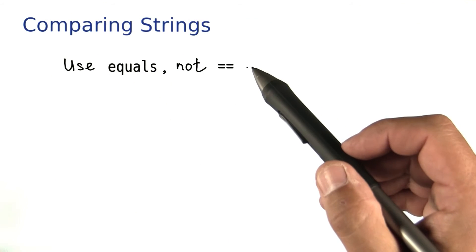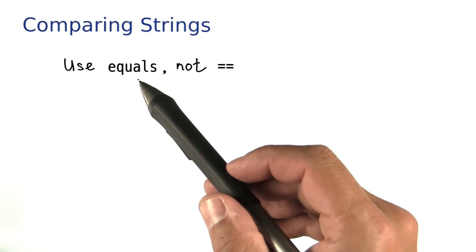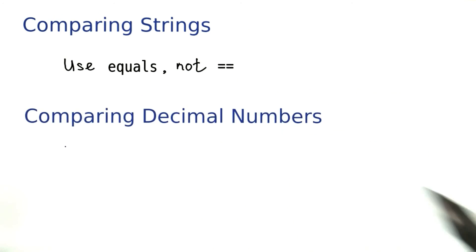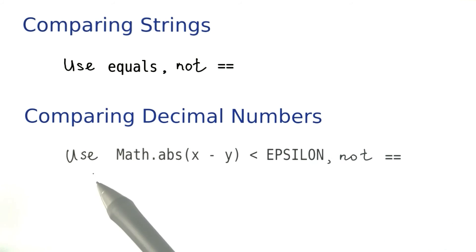So the takeaway is, when comparing strings, use the equals method and not the equal equal operator. And as a reminder, when comparing decimal numbers, be sure to check whether the numbers are close to each other and also don't use equal equal. Now when do you use equal equal? For integers, of course.